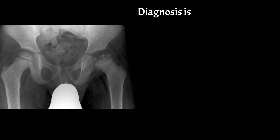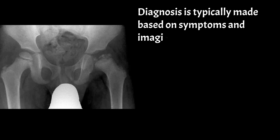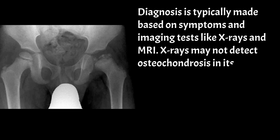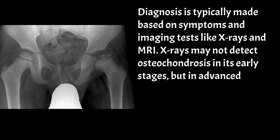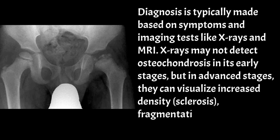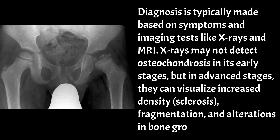Diagnosis is typically made based on symptoms and imaging tests like X-rays and MRI. X-rays may not detect osteochondrosis in its early stages, but in advanced stages, they can visualize increased density, sclerosis, fragmentation, and alterations in bone growth patterns.